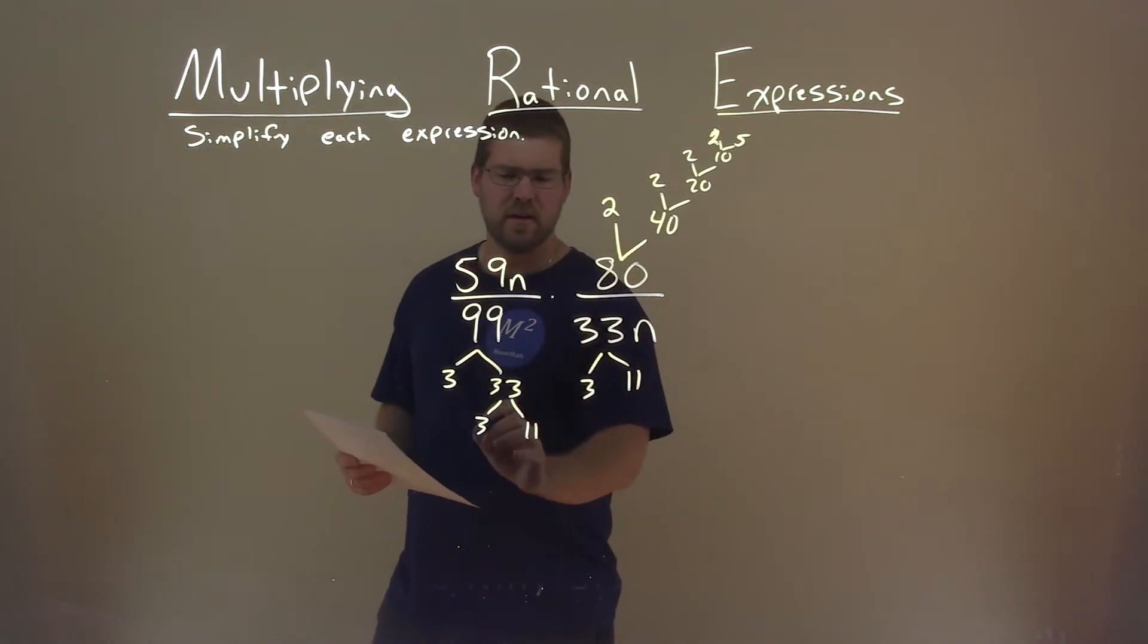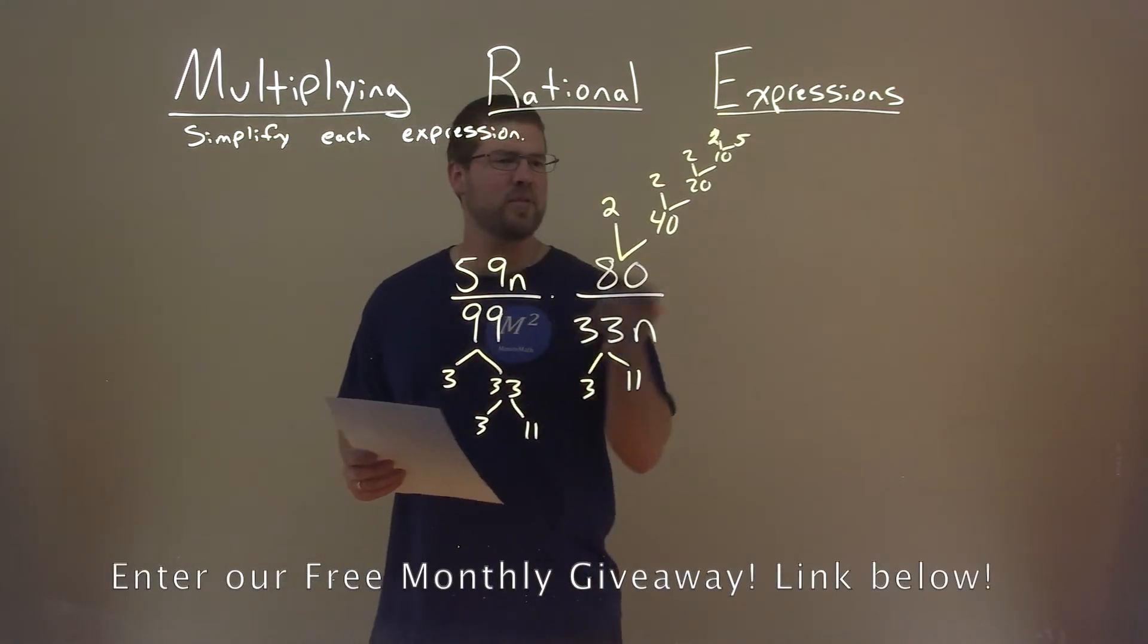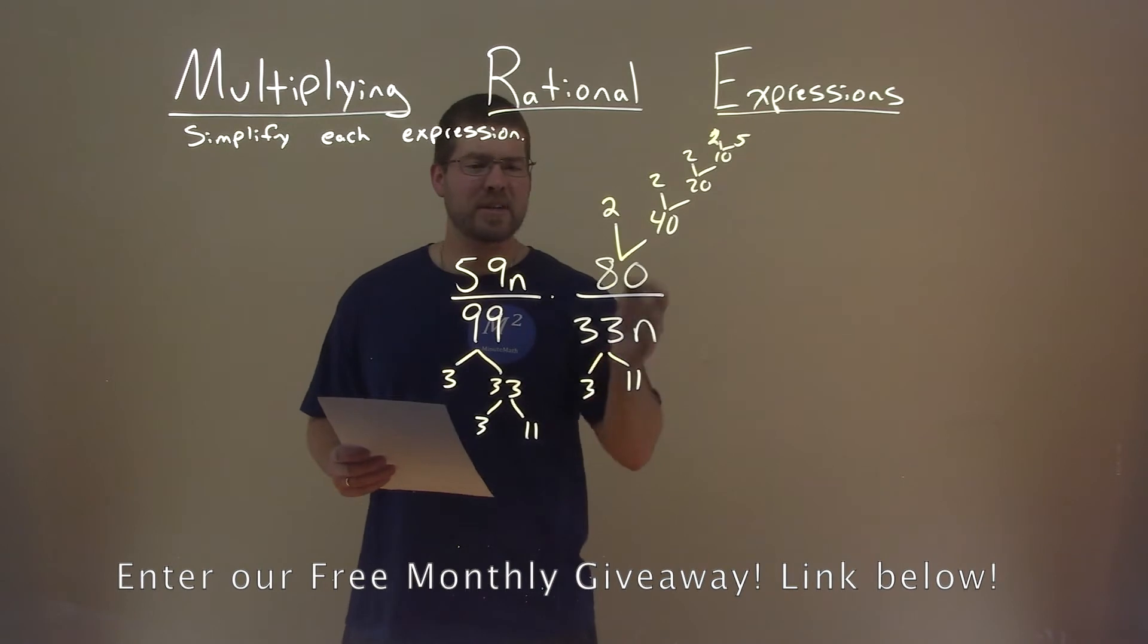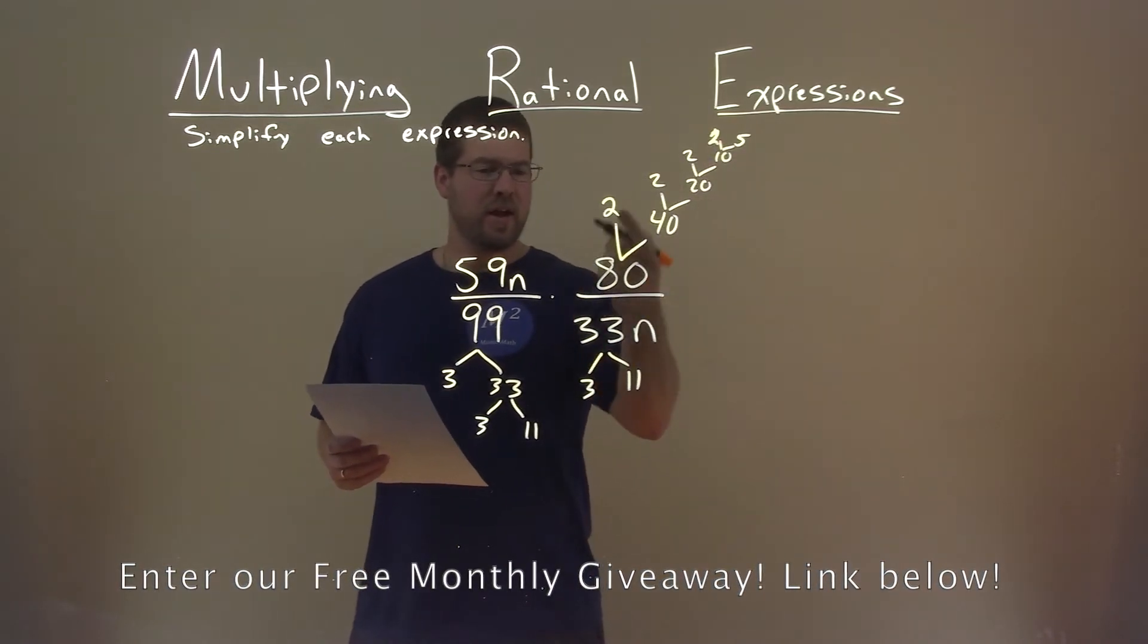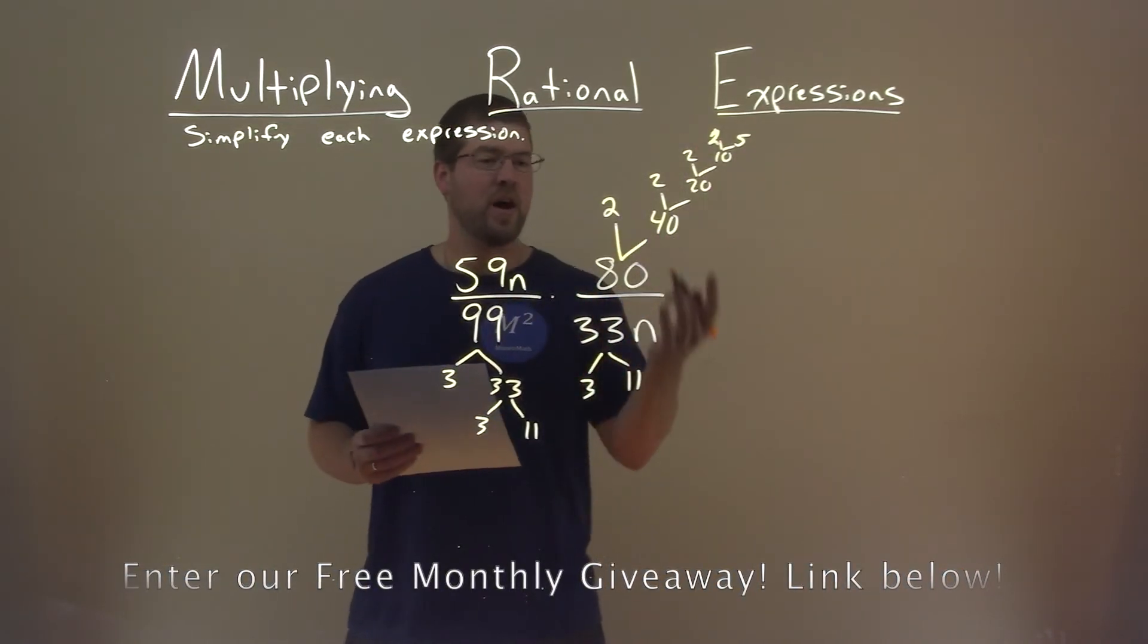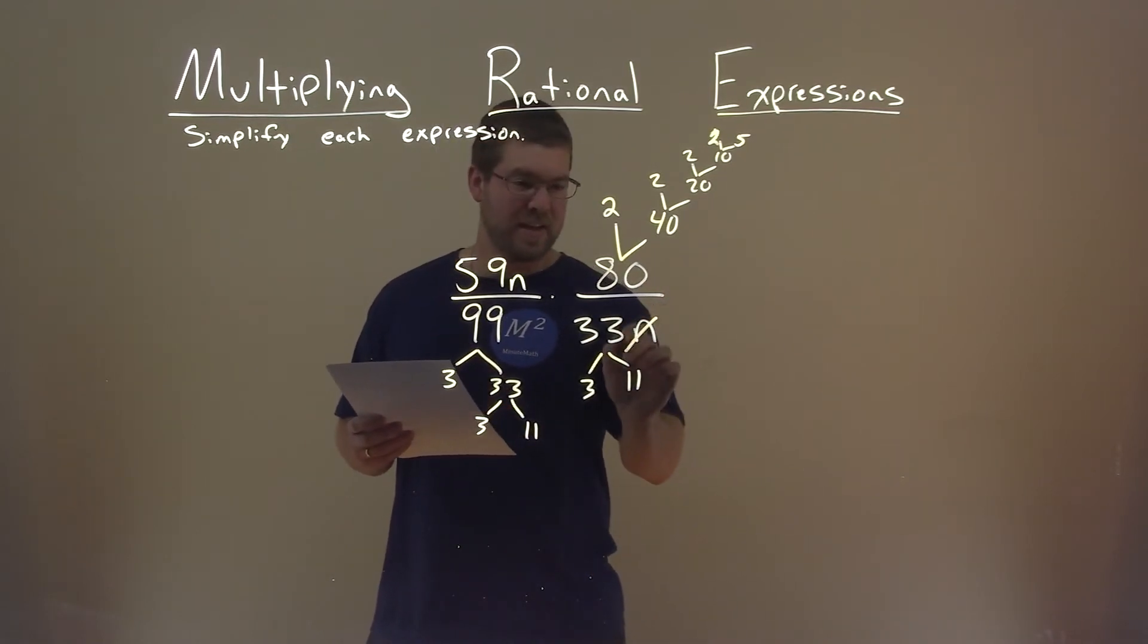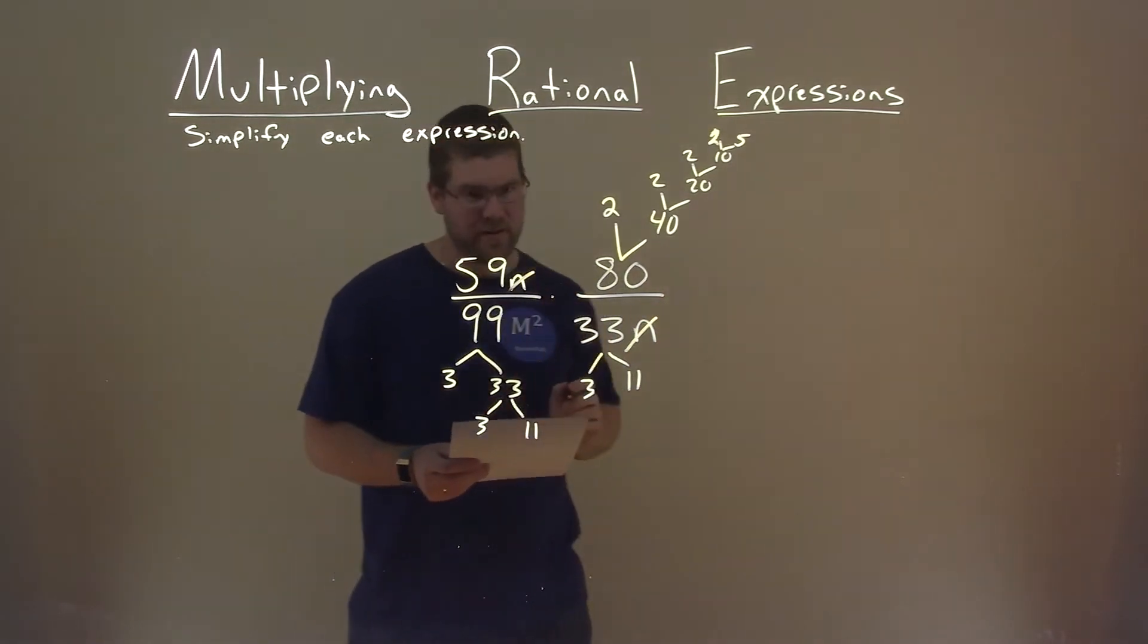And looking here, I'm trying to see things that I can cancel and simplify out from the denominator to numerator, and there's nothing that actually simplifies out. I can't cross off anything. The only thing I really can see is the n's. There's an n down here and an n up there.